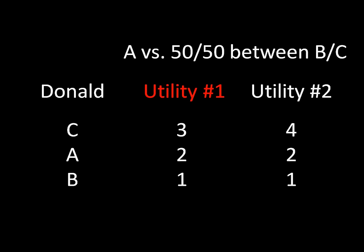But when it comes to expected utility representation number two, this is different. Here, Donald is still receiving two for Armenian food. But this 50-50 randomization between C and B, now when we multiply that out, 4 times one-half plus 1 times one-half is 2.5. Which means, according to utility representation number two, Donald prefers the lottery between those two things as opposed to receiving Armenian food with certainty.